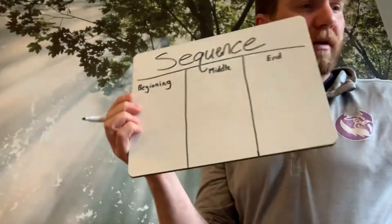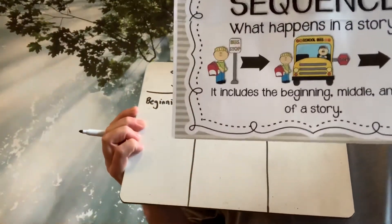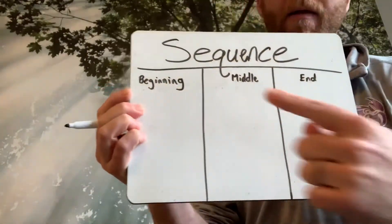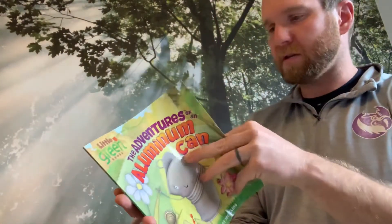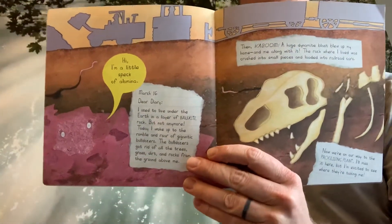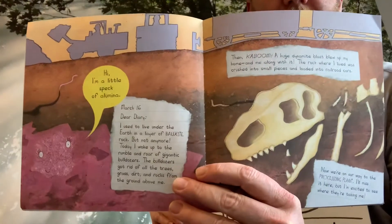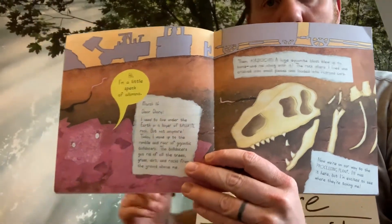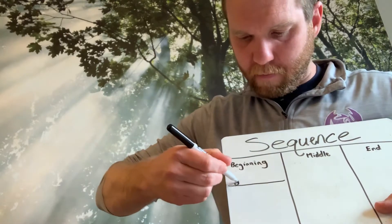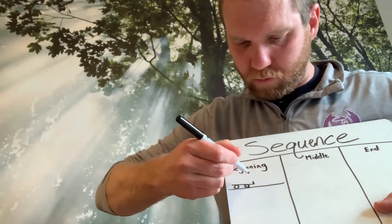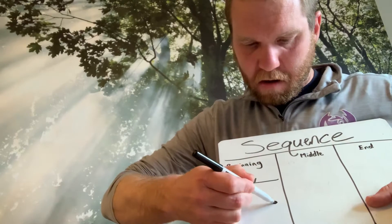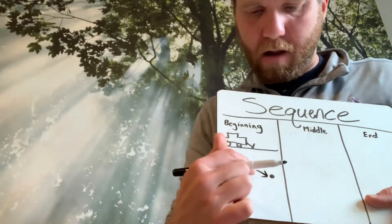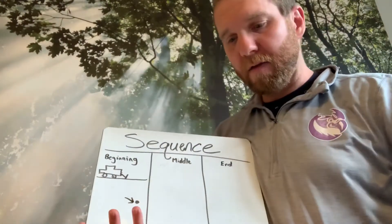And the last thing we're going to talk about is the sequence — what happens in the story: what happens in the beginning, in the middle, and at the end. At the beginning, our character was in the ground. We'll draw the ground here, maybe some bulldozers. At the beginning, our aluminum is underground. And then he was taken away.